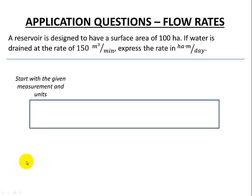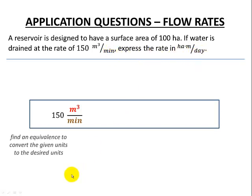Once again let's start with our given rate, 150 cubic meters per minute. We'll have to change the cubic meters to hectare meters and we'll have to change the minutes to days. Let's look up our equivalences. We can see that one hectare meter is 10,000 cubic meters. Watch out for this one, it's a very common error to drop one of those zeros. It's 10,000 or 10 to the fourth cubic meters.